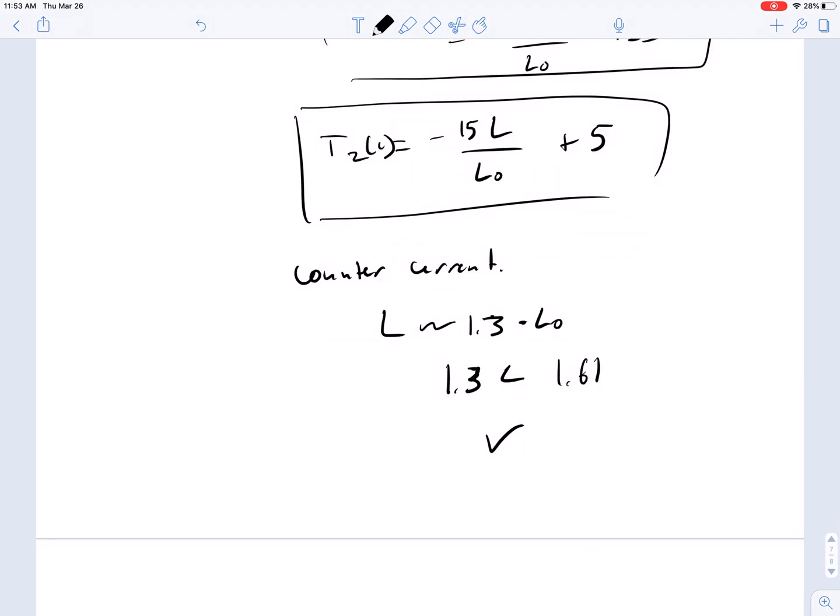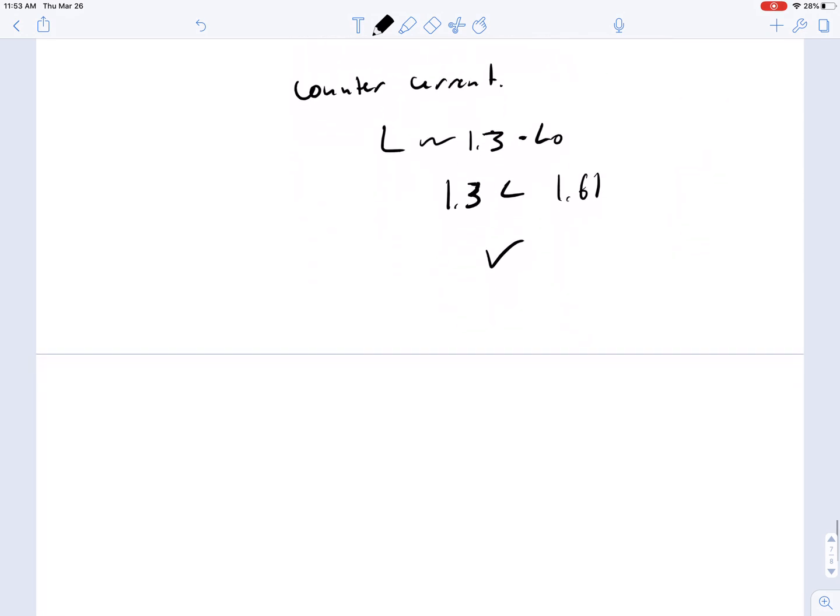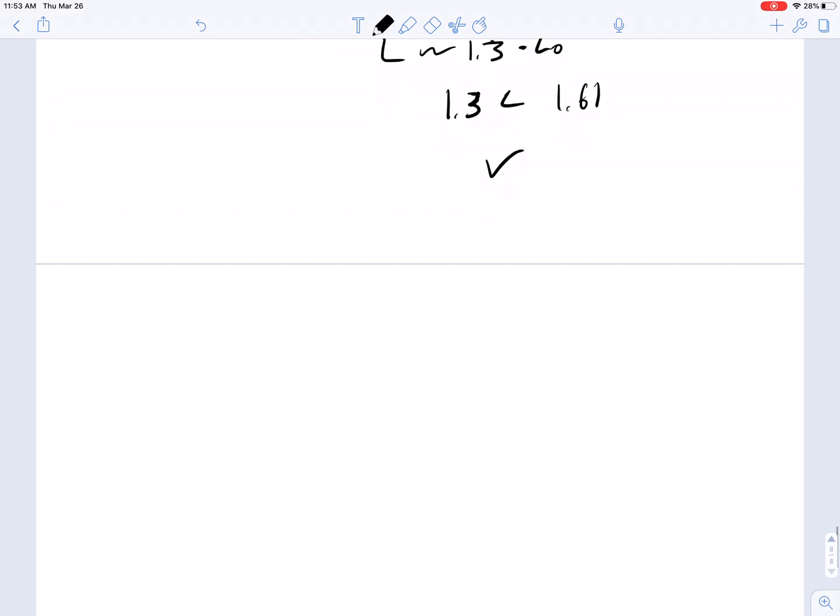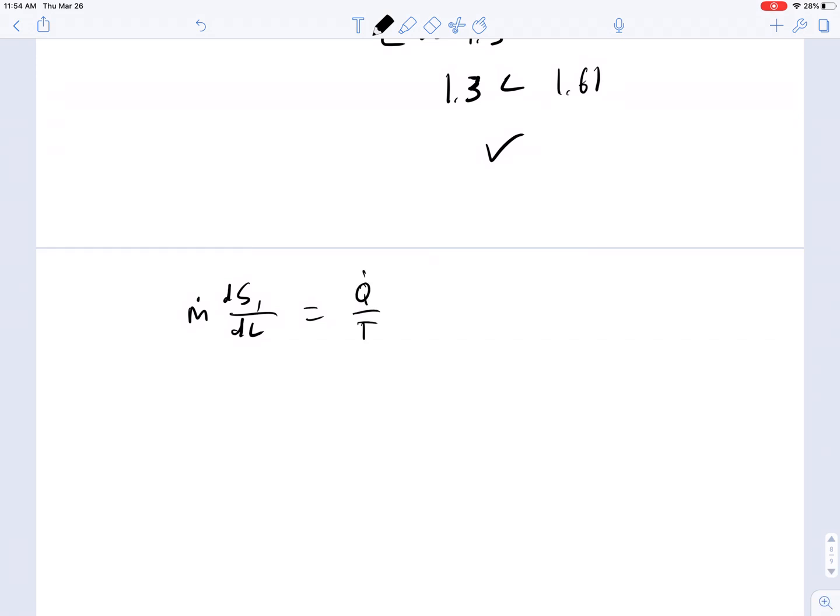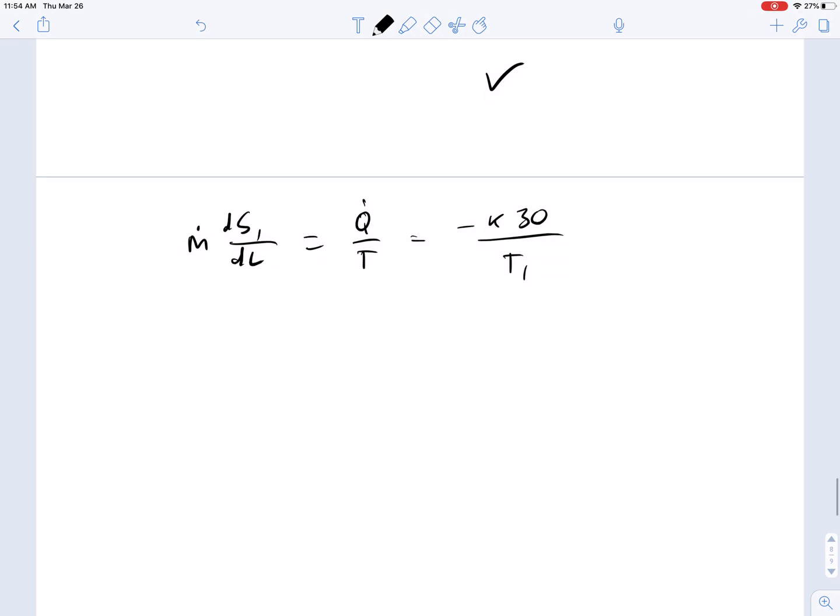Because the overall energy balance is so simple, this also makes the entropy calculation that much simpler. For the entropy term on the counter-current heat exchanger, M dS1/dL is going to be equal to that Q dot over T, which is going to be equal to minus kappa times 30 over T1. And so, we can just substitute in what our solution is for T1.